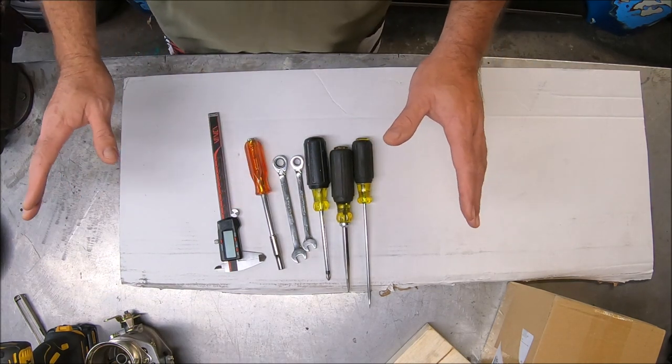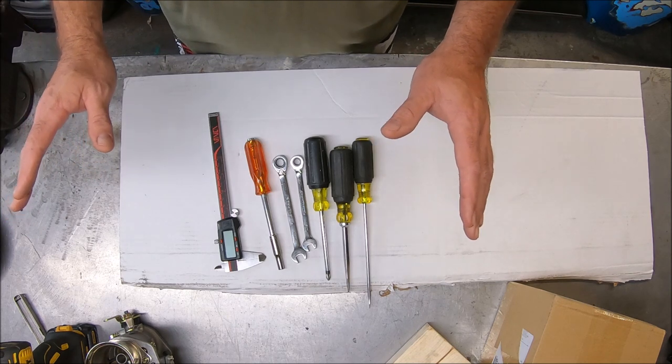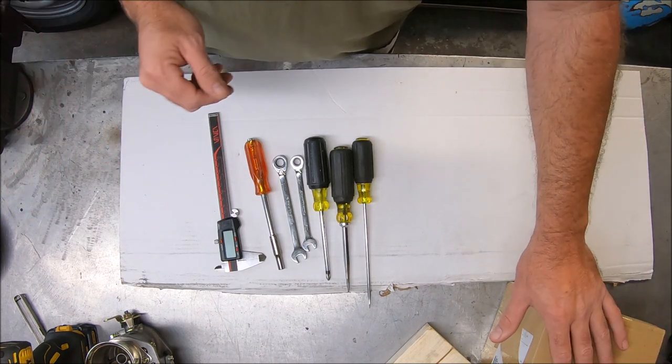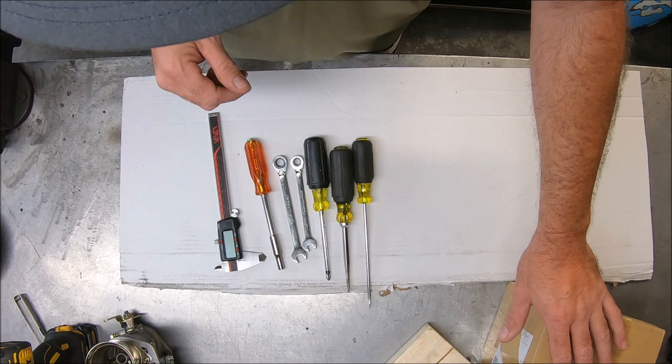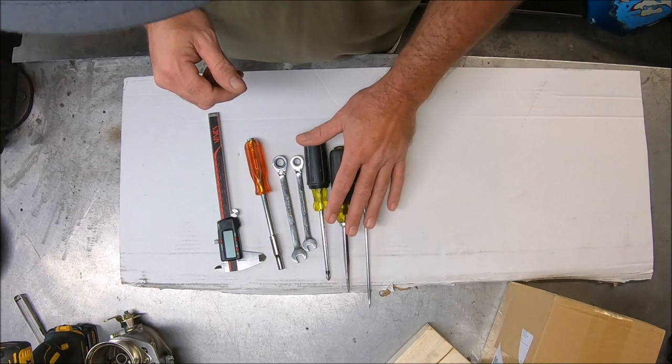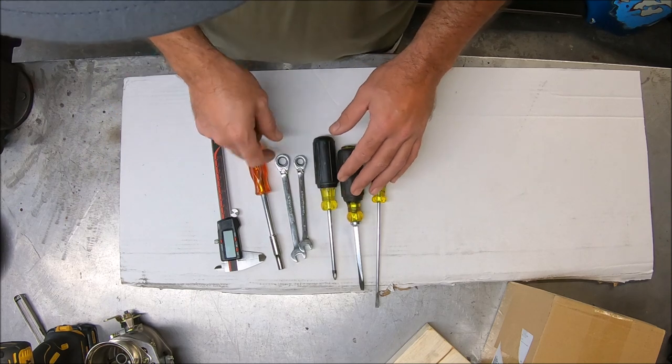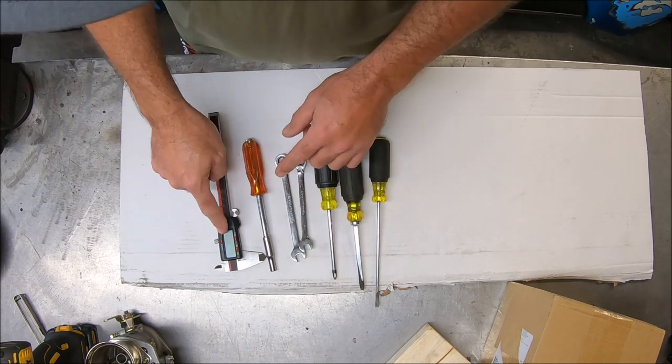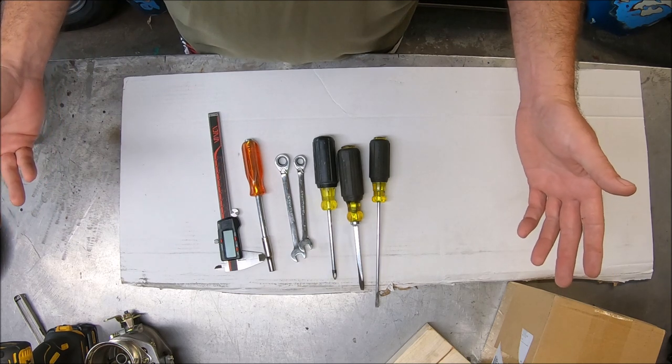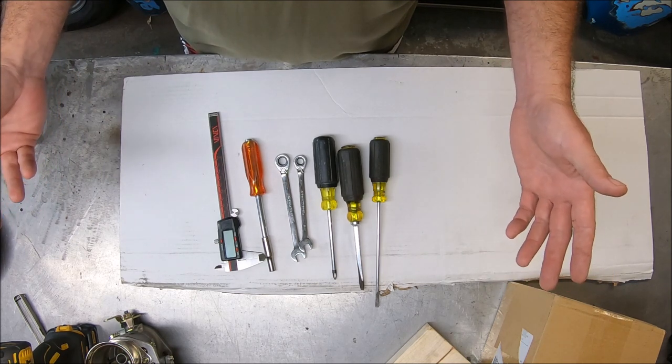As the birds are out there chirping this morning, we'll get started on unboxing and getting the other one set up. As you can see here, we just need a couple different tools: a flathead of your choice, Phillips head, 8-10mm, 7-32nd socket, and a digital caliper. That's about all you need.